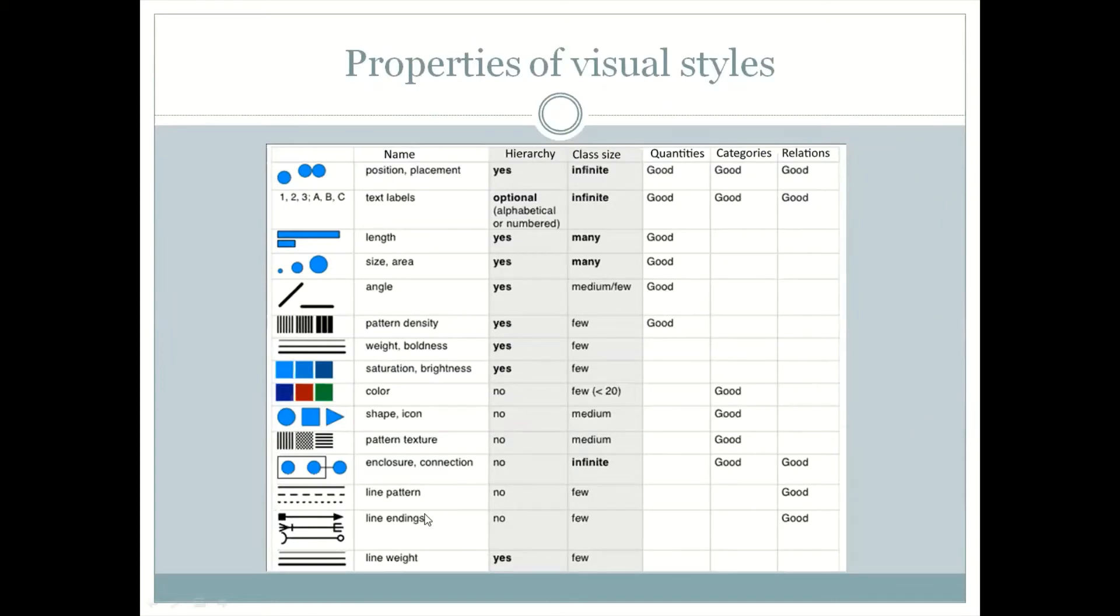For example, quantities, categories, and relations, these are the three things that we've looked at, and the class size: how many data points can actually be pumped into this. If you have a lot of data points, you will definitely avoid using the line pattern because you can't have too many line patterns. If you have a lot of weightages or different kinds of things that you want to show, line patterns won't work.